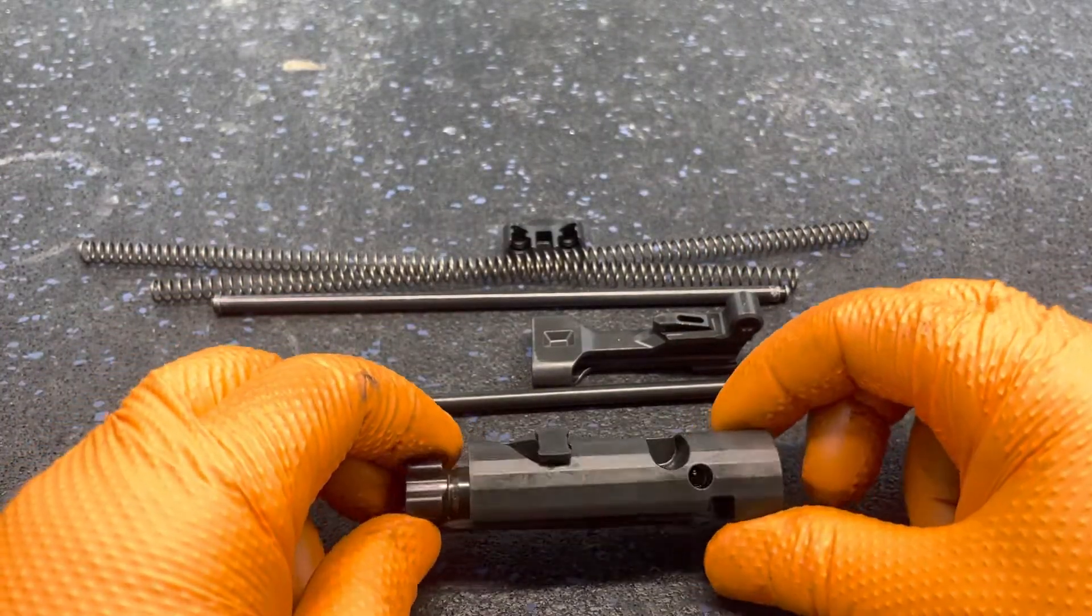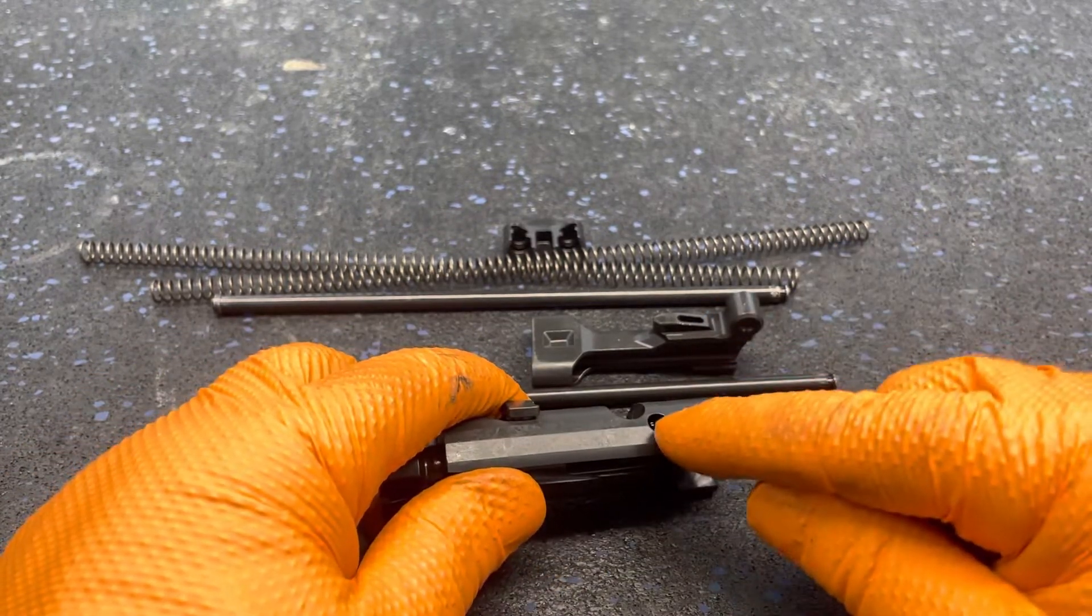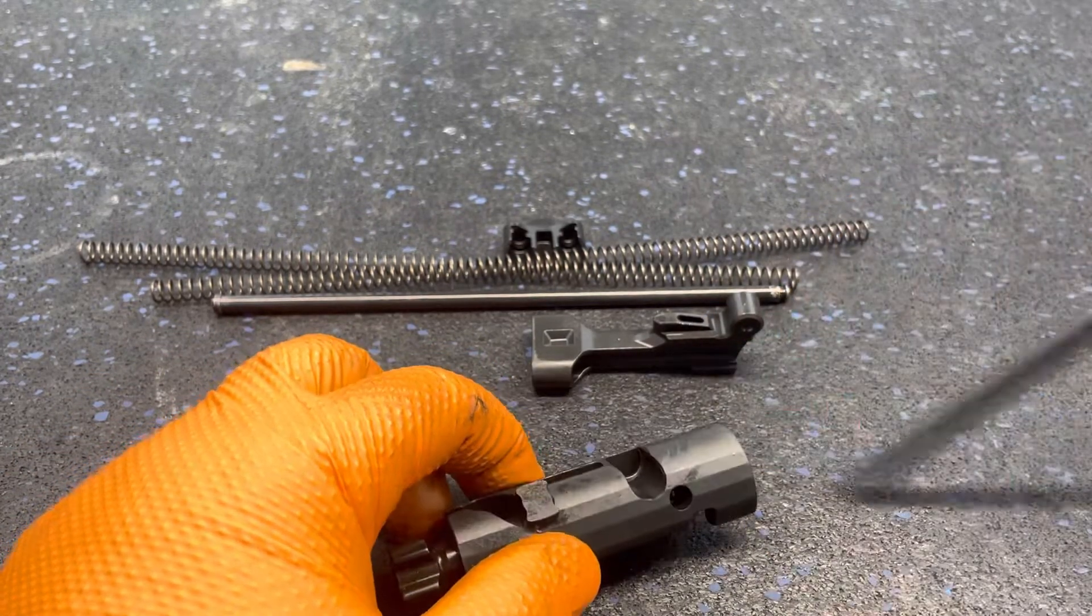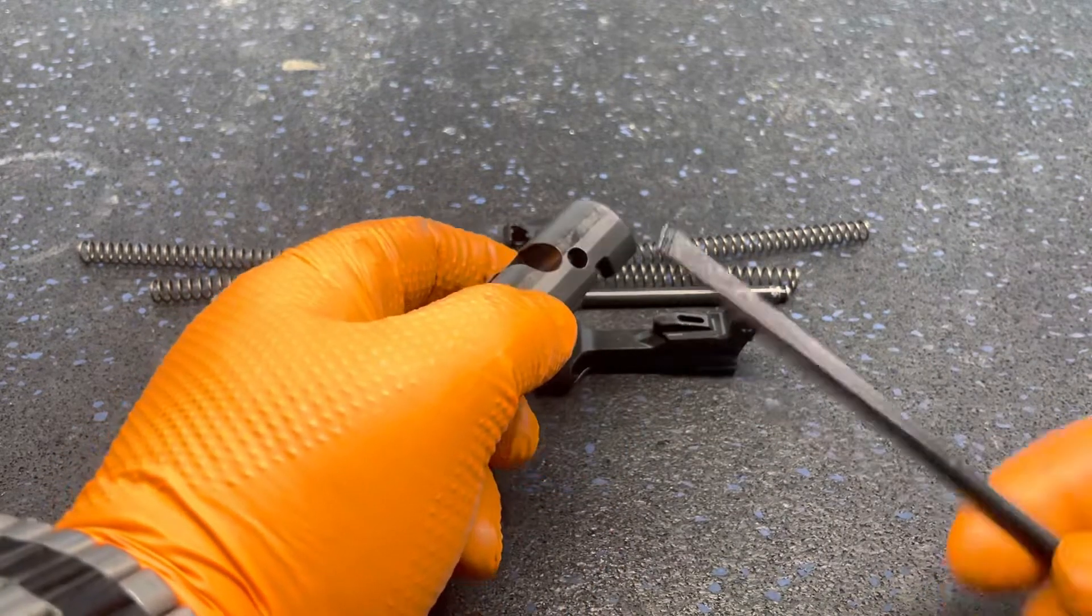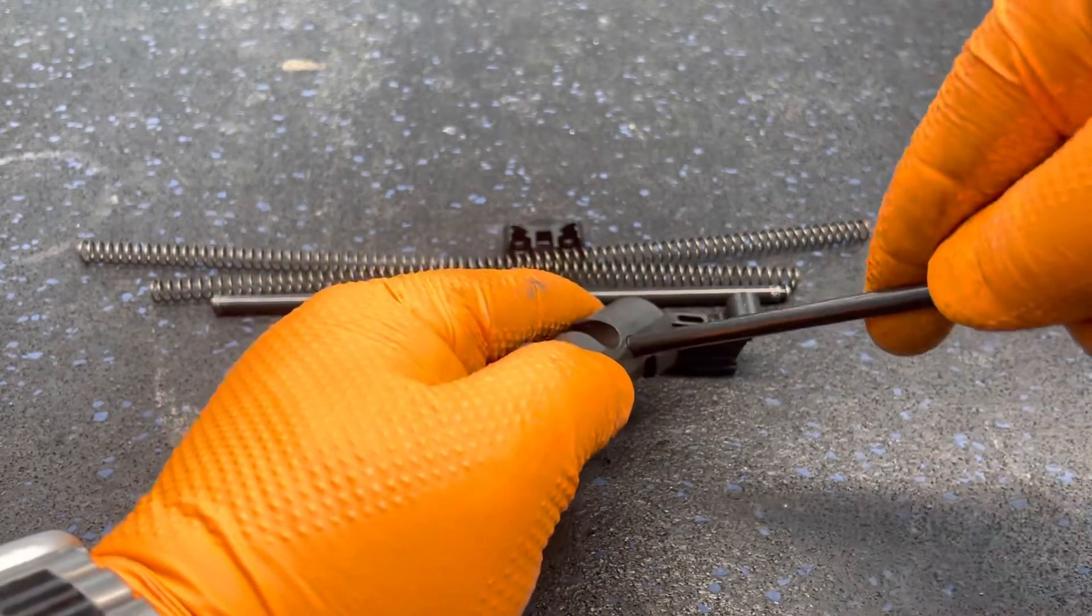To remove the bolt from the carrier, you have to first remove the firing pin retaining pin. I like to use the recoil spring rods to push it through.